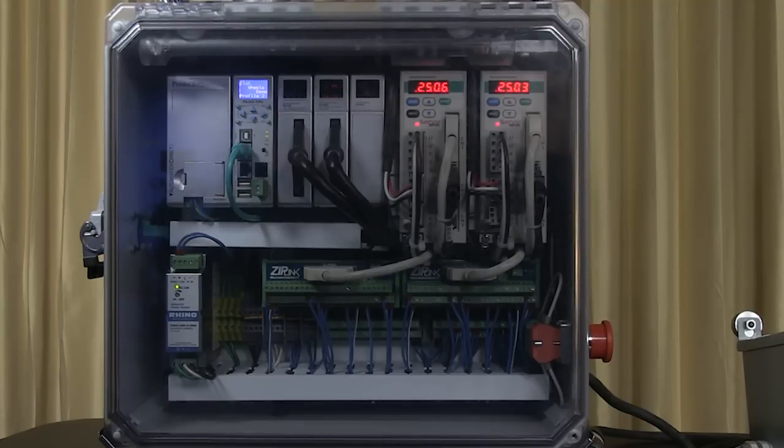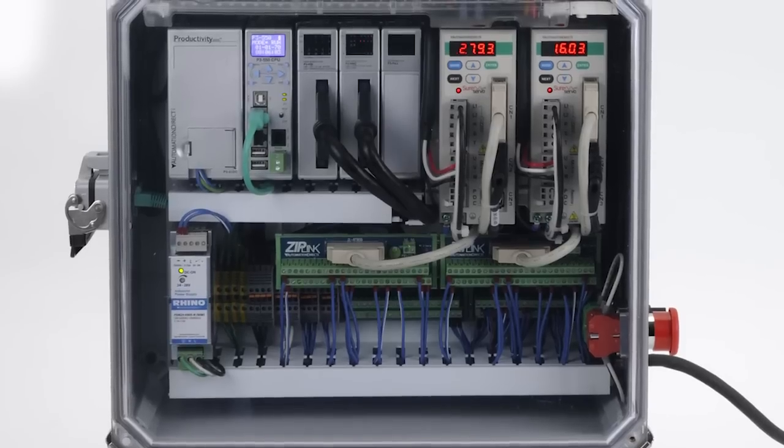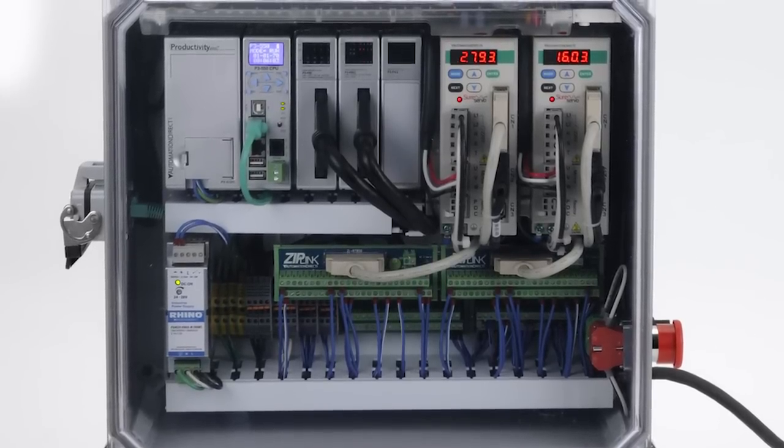The Productivity 3000 is our flagship programmable controller. This example is housed in a three-slot base with a 24-volt DC power supply, a P3-550 CPU, one high-speed output module, the P3-HSO, and one high-speed input module, a P3-HSI.